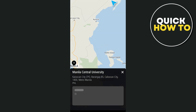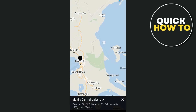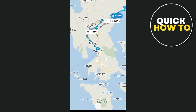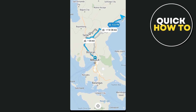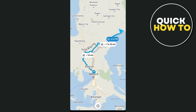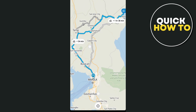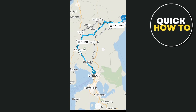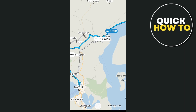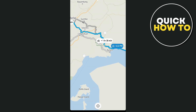Once you've reviewed the route, tap Agree to start navigation. While driving, the app will guide you turn by turn, showing the next steps clearly. You can also mute or unmute the voice commands by tapping the volume icon if you prefer visual cues only.